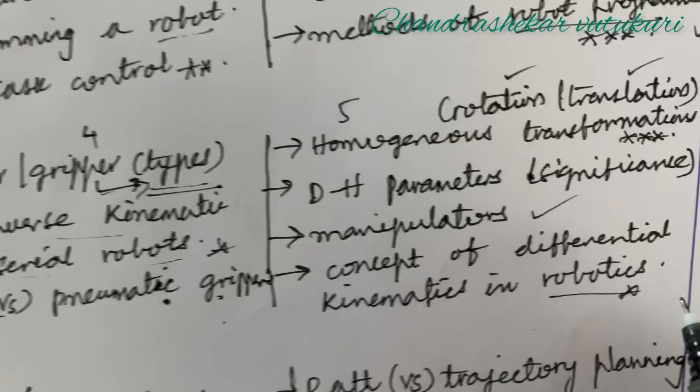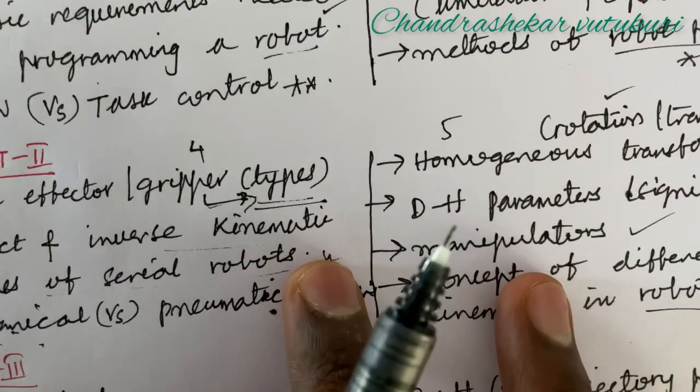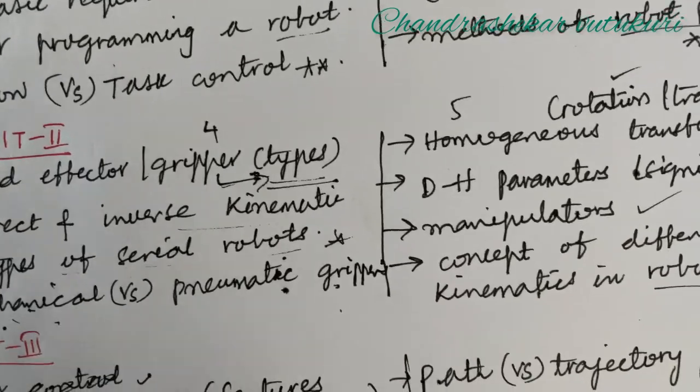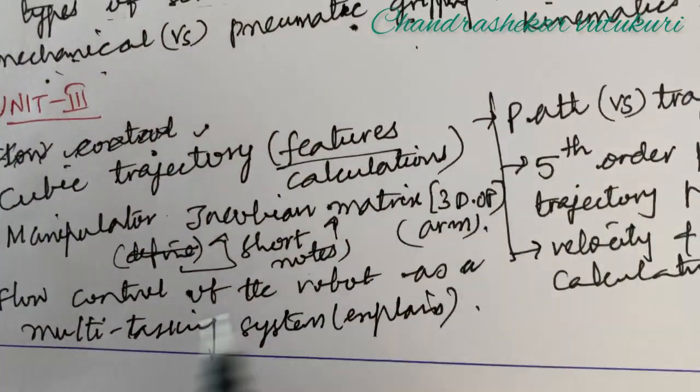They will be asking you the problems as well as sometimes they will be asking you to work out the homogeneous transformation matrix and DH parameter significance and the different manipulators. The concept of differential kinematics in robotics is also set to the topmost question. If you are not clear with the concept, do not work out this. At the end you will be getting confusion, so read one, five, and four.